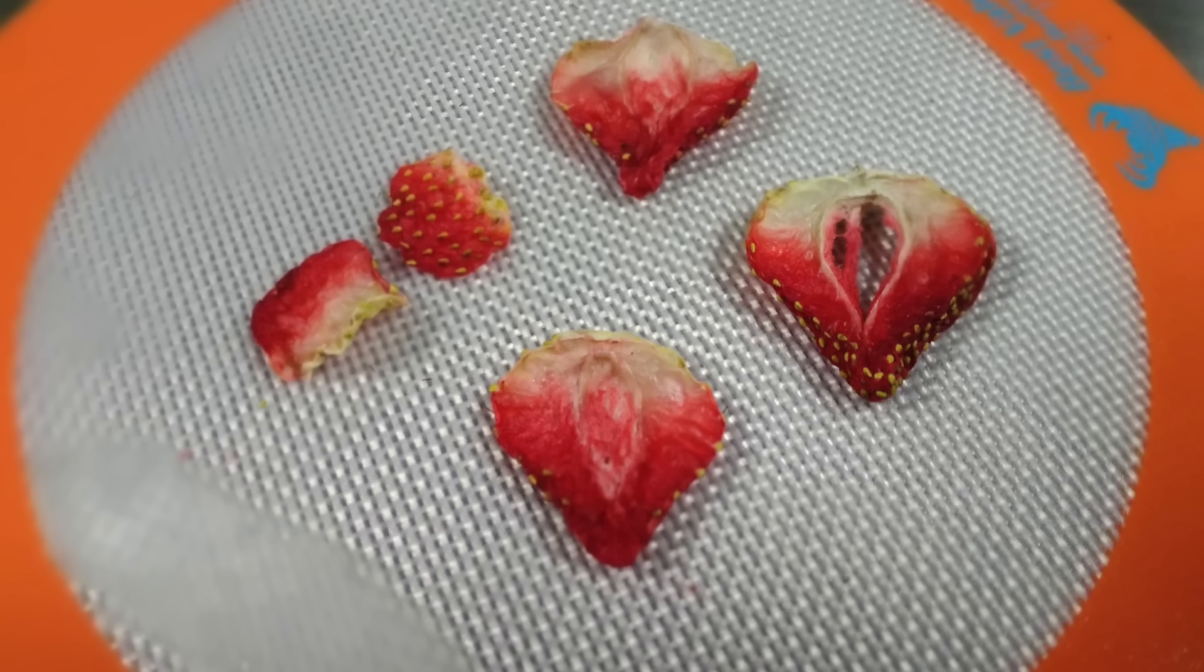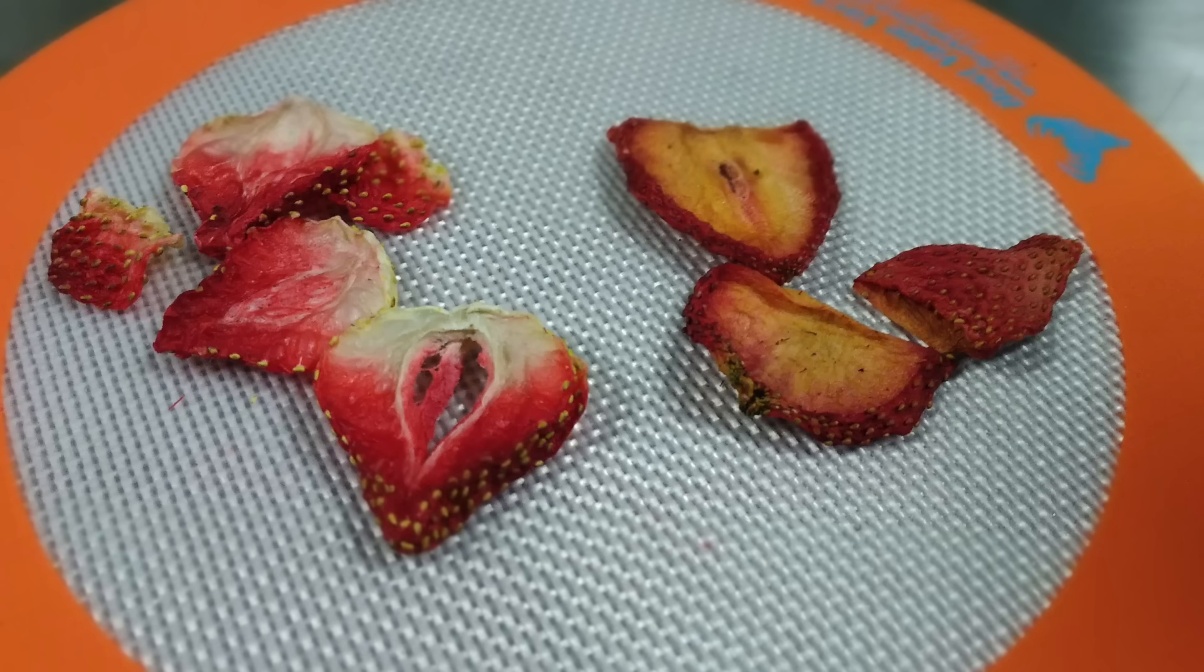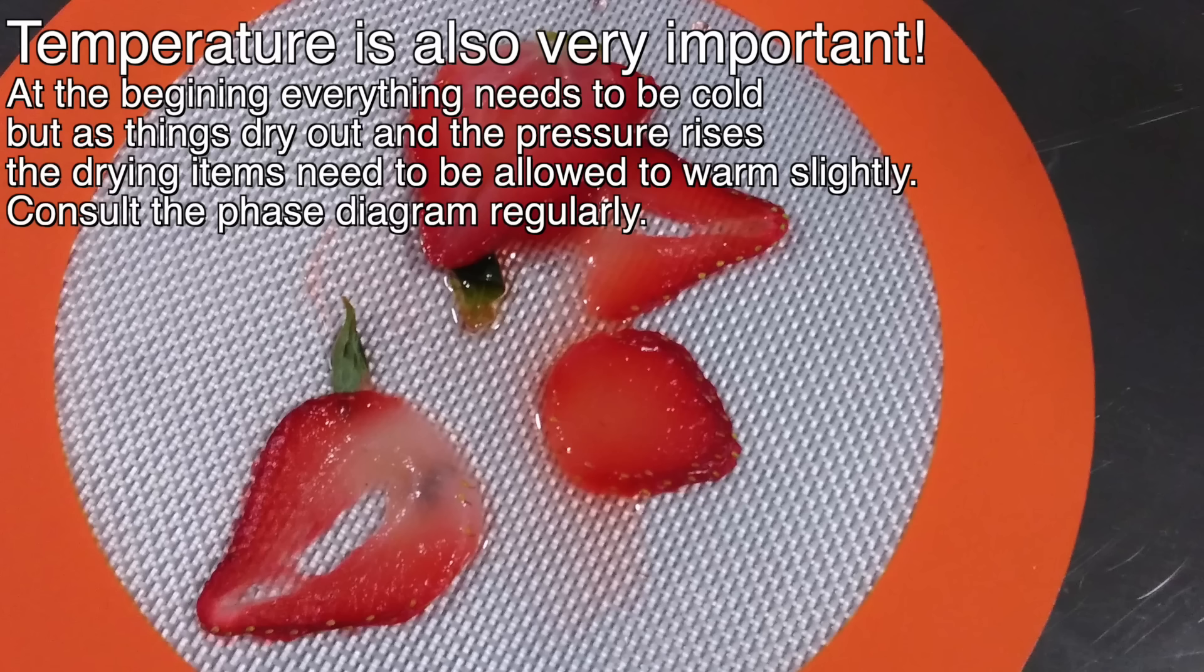Since no heat was used to dry these, they still maintain all of their flavor compounds in a more or less pristine state, so there's no caramel flavor and everything is light and fluffy, not chewy or bendy. Here's a comparison of strawberries dried in a dehydrator with heat and a freeze dryer. The difference is really obvious. An important note is how critical the pressure is. If the pressure isn't low enough, all you'll end up with is some strawberry mush as I found out on my first run when I still had a bit of a leak.